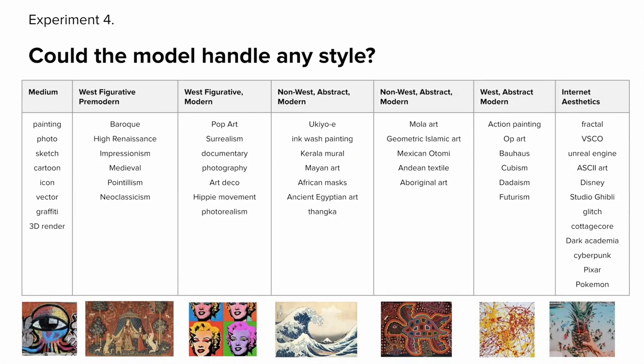Another experiment addressed whether text-to-image AI models could handle any style. We pulled styles from existing knowledge bases of art history and aesthetics online and investigated 51 art styles, choosing them to balance factors like time periods, culture, and whether they were abstract or figurative. This gave us a good spread to understand if there were any biases the model was pre-inclined towards.